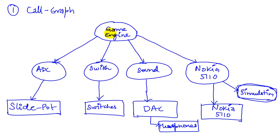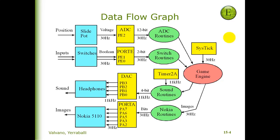Now let's look at the data flow graph — another way to visualize modularity. We recreate the five modules: game engine, ADC, switch, sound, and the Nokia 5110 module. Now we're going to see what the real data exchange is going to be.